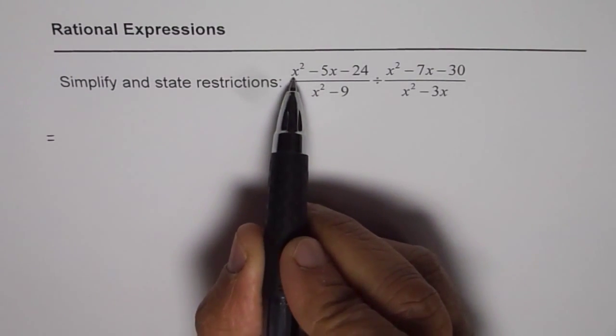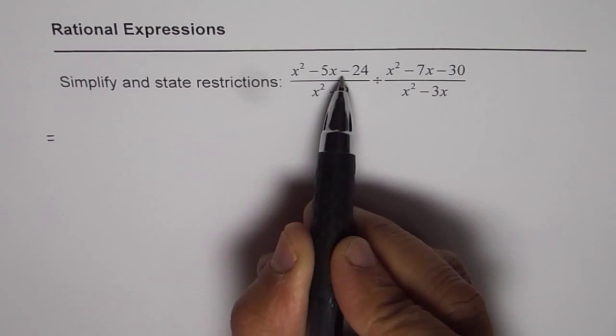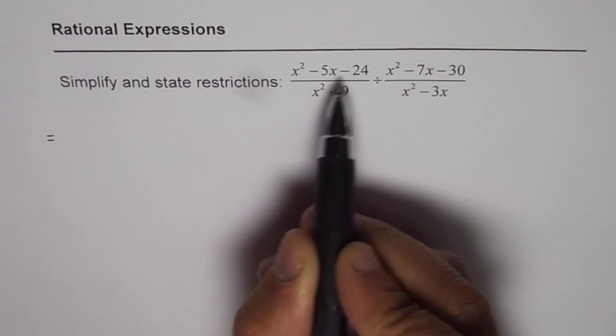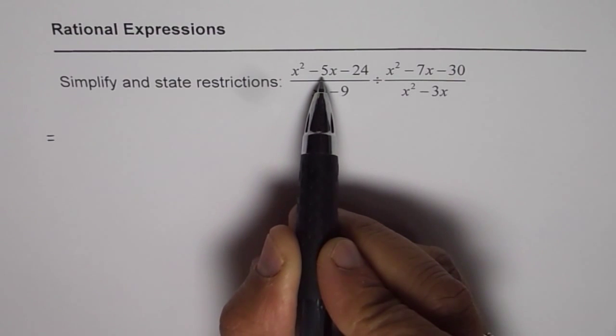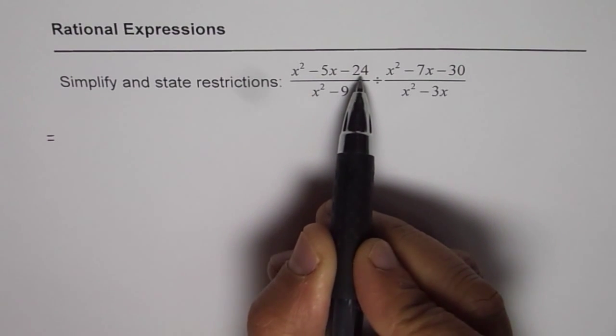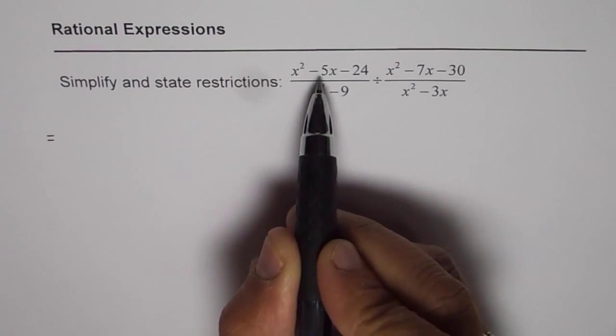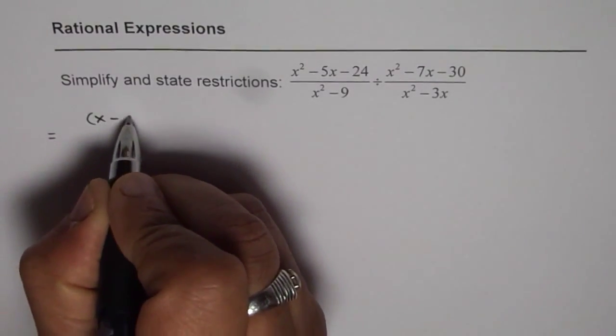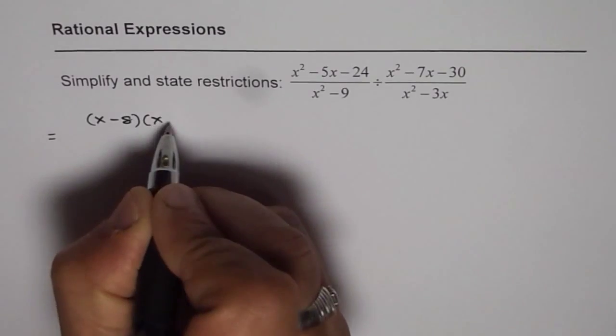We are looking to factor the trinomial x squared minus 5x minus 24. That means we need product of minus 24 and sum of minus 5. 8 and 3 is 24. To get minus 5, it is minus 8 and plus 3. So, we can write this as x minus 8 times x plus 3.